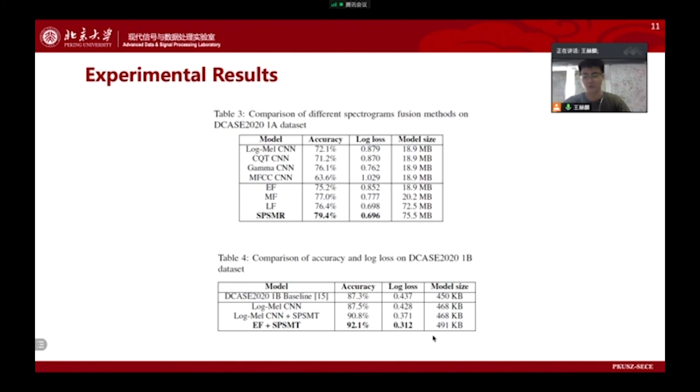Our method is also evaluated on DCASE 2020 Task 1B set. As presented in Table 4, EF plus SPSMR outperforms the official baseline with similar model size, which shows that both EF and SPSMR are powerful methods to improve the performance for ASC efficiently with few extra parameters. Different network structures are employed in 1A and 1B, which shows that our proposed spectral processing strategies can fit different networks.